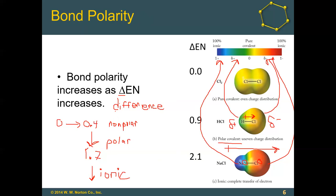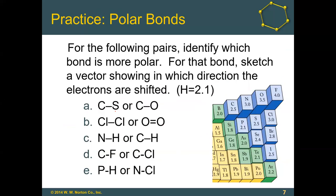Take a look at the electronegativity chart — hydrogen's value, which got cut off, is 2.1. For each of the following pairs of bonds, identify which bond is more polar. For example, carbon is 2.5 and sulfur is 2.5 — what is the difference for that bond? Hopefully you said zero.